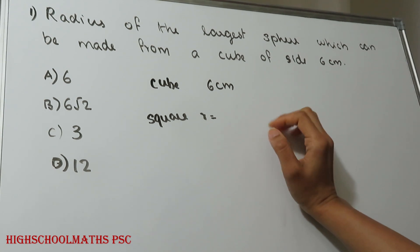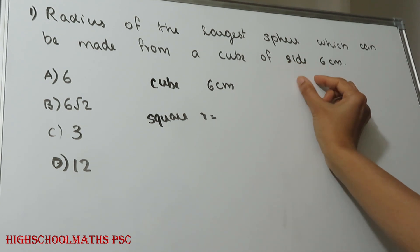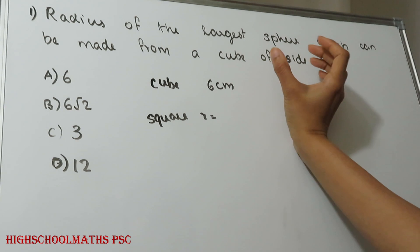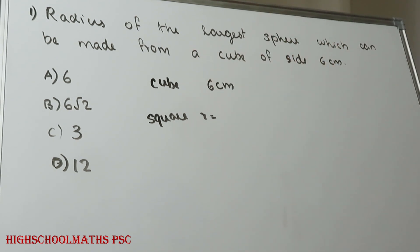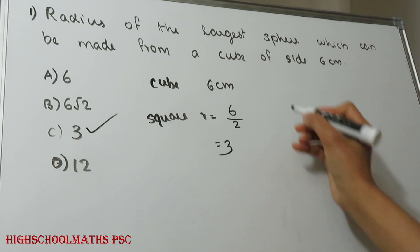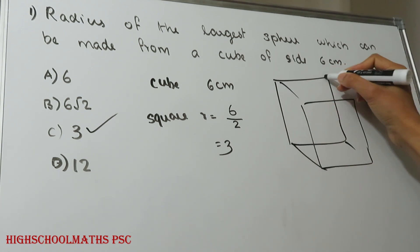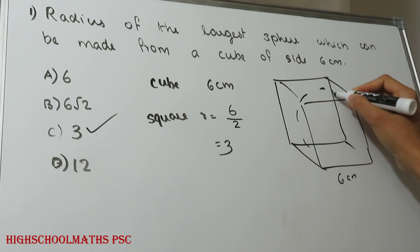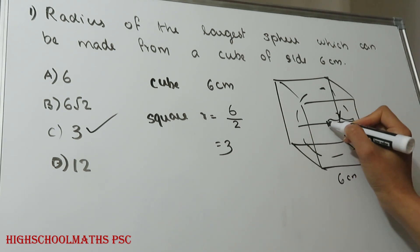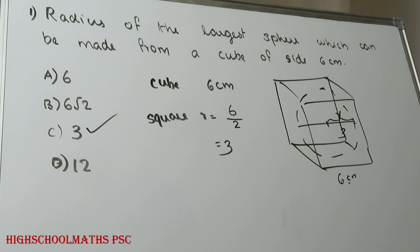Let's talk about PSE 2018 women's civil exercise officer post. Question 1: What is the radius of the largest sphere which can be made from a cube of size 6 cm? The cube is 6 cm. The diameter of the sphere equals the side of the cube, which is 6 cm, so the radius is 3 cm. Option C is the right answer.